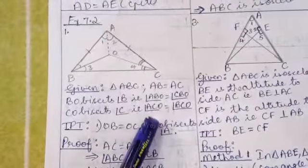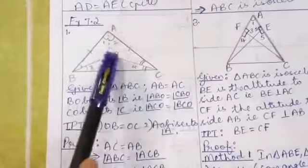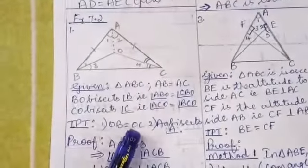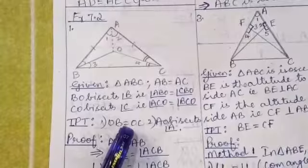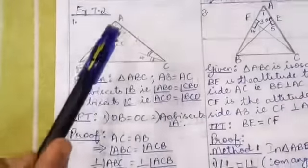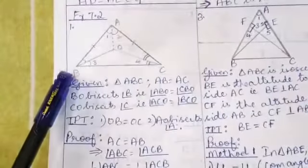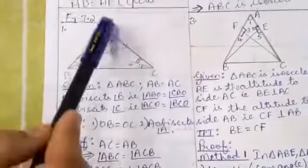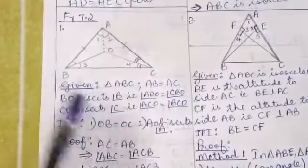Given this, we need to prove that OB equals OC. Now, we know that AC equals AB — this is given to us in triangle ABC.